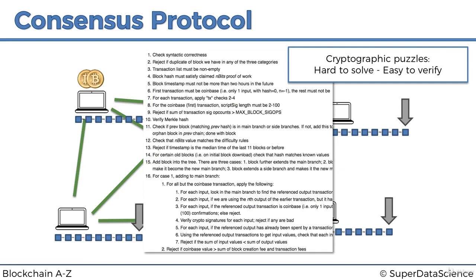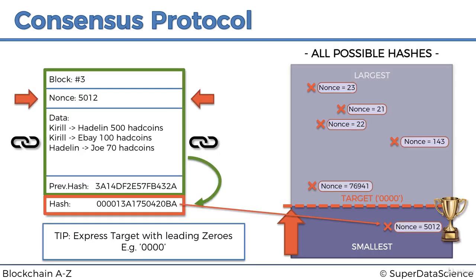One important thing before moving on: the cryptographic puzzle is hard to solve but easy to verify. Mining requires going through billions of nonce variations to find the right hash — brute forcing your way through. But verifying is trivial: you just take all the block information, put it into the hashing algorithm, get the hash, and check that it's under the target. That's it.